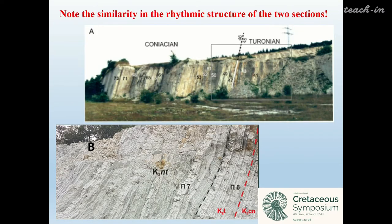Note the similarity in the rhythmic structure of the two sections. Section A is the GSSP section Salzgitter-Salder, and B is our section of the quarry.